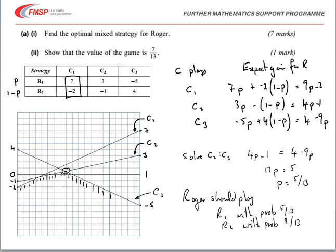The value of the gain comes from substituting that into one of the equations for the expected gain. It doesn't really matter which one. So if we take the top equation... I use the equation C1, of course it's one of C2 or C3 I need. So 4P minus 1. That gives me 4 times 5 over 13 minus 1. So that's 20 over 13 minus 13 over 13 or 7 over 13. So we've showed that the value of the gain is 7 over 13.